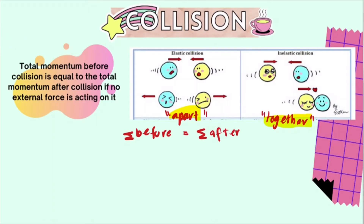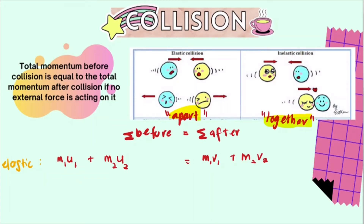I will write down the general formula for each collision. The total momentum before the collision is the sum of the momenta of the two objects: the mass of the first object multiplied by its initial velocity, added to the mass of the second object multiplied by its initial velocity. For after the collision in an elastic collision, it is almost similar, but we replace initial velocity with final velocity for each object.